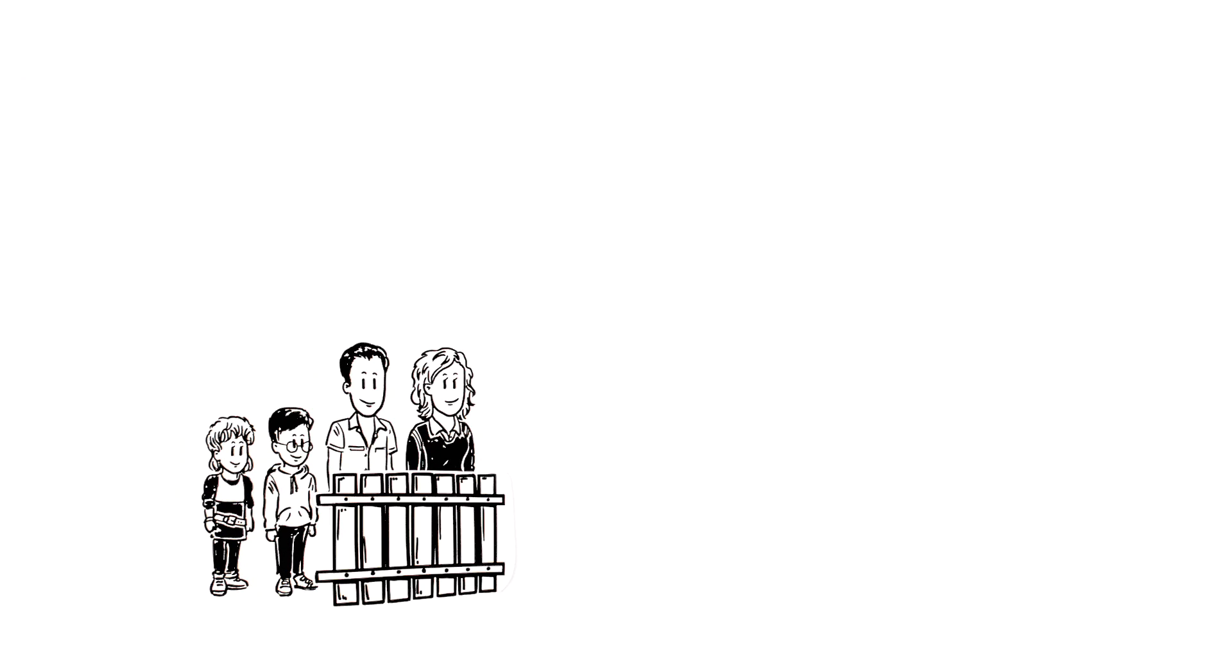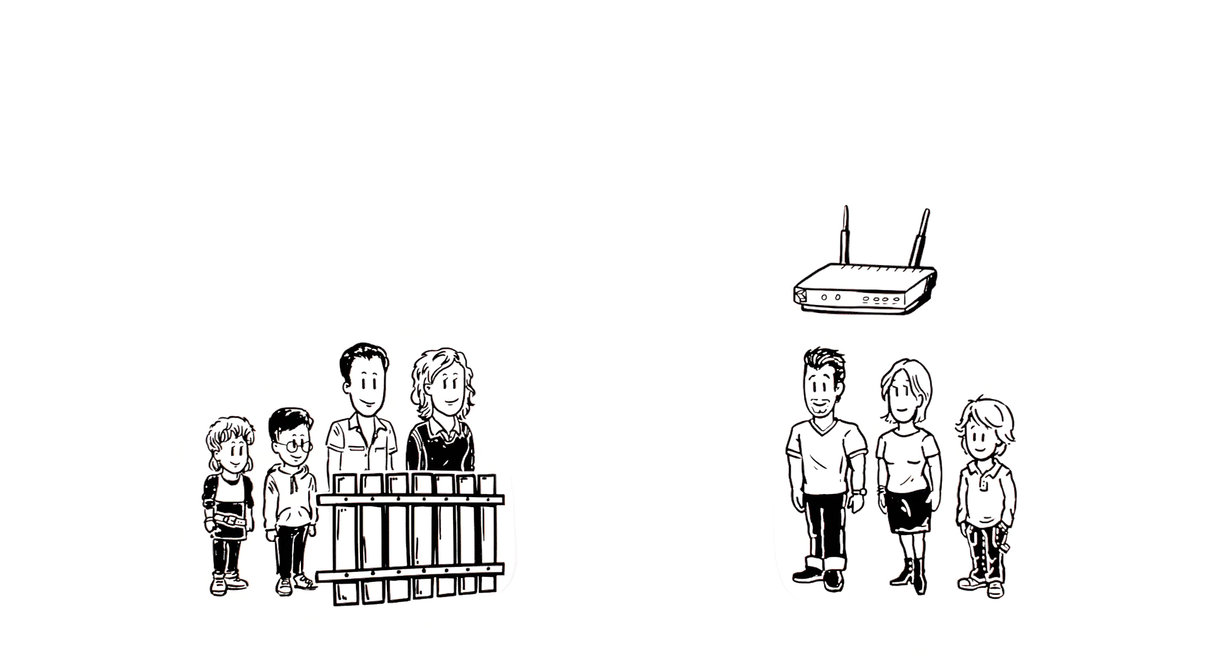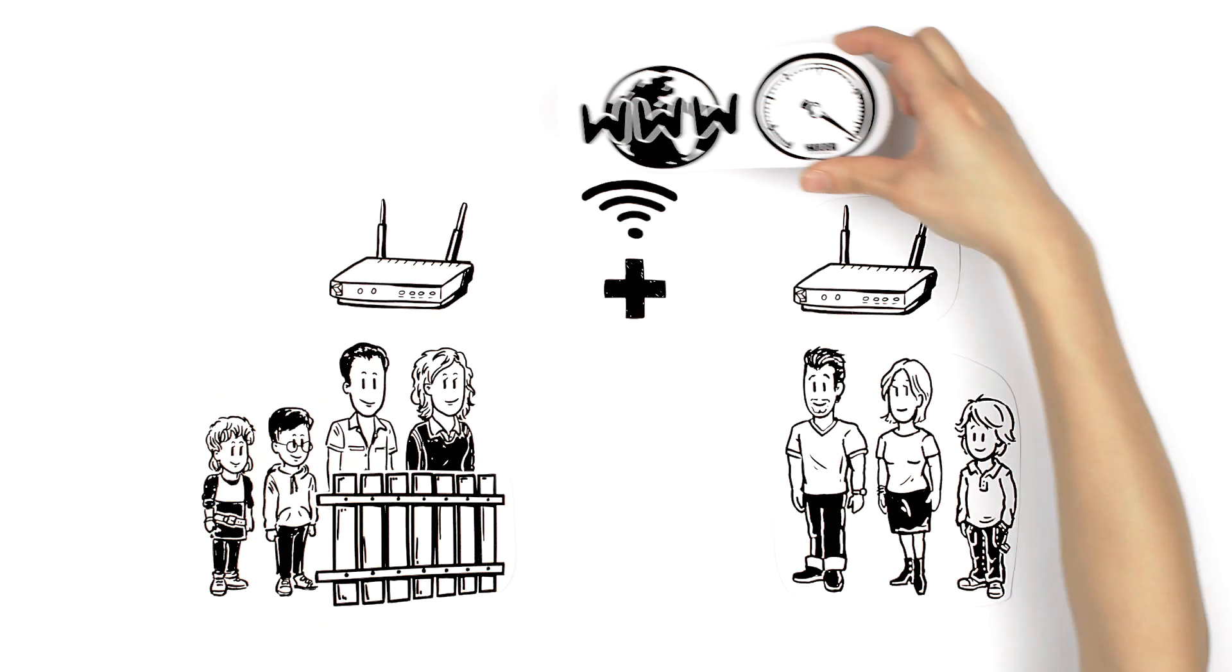The Millers live next door to the Johnsons, who also have internet access. If we combine their household's access, the connection will be significantly faster.